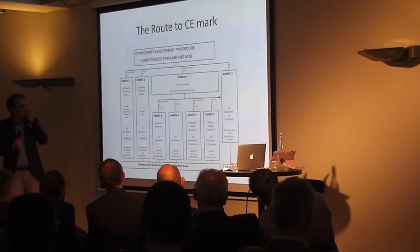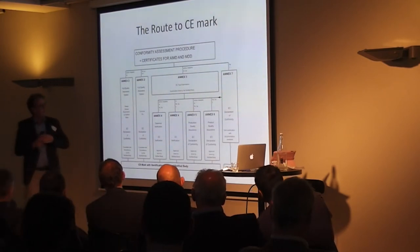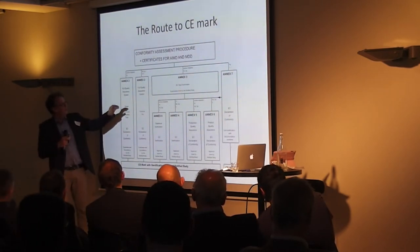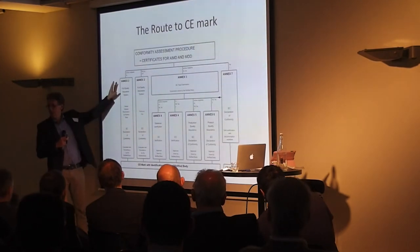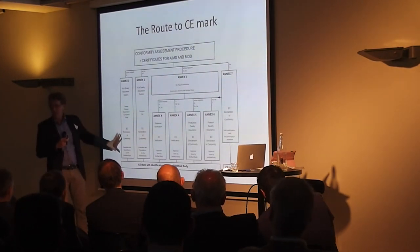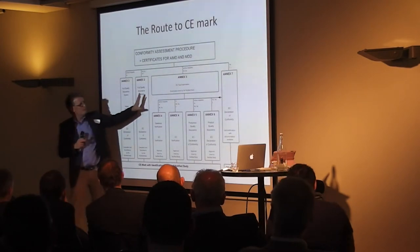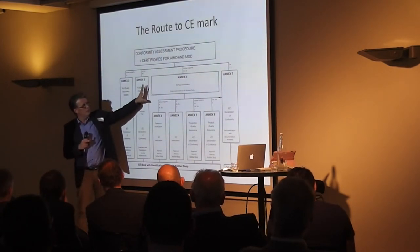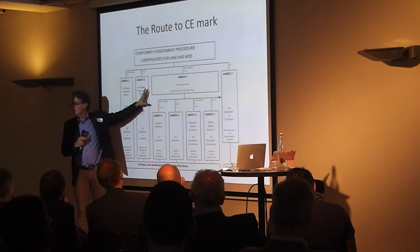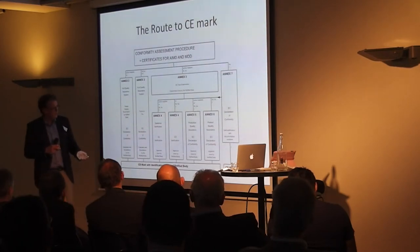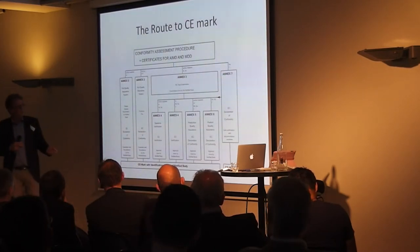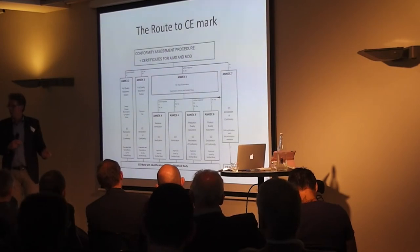This constellation — this is design and manufacturing. A full quality system addresses the design of a product and manufacturing. The type examination is evaluating the design — is it designed correctly? And these are the routes. You always have production quality assurance, where you have to have your production process.